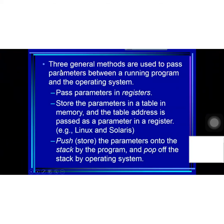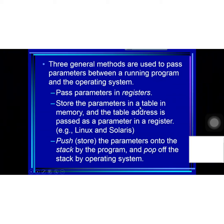Three general methods are used to pass parameters between a running program and the operating system. The first way is to pass parameters in registers. The second way is to store the parameters in a table in memory, and the table address is passed as a parameter in a register.